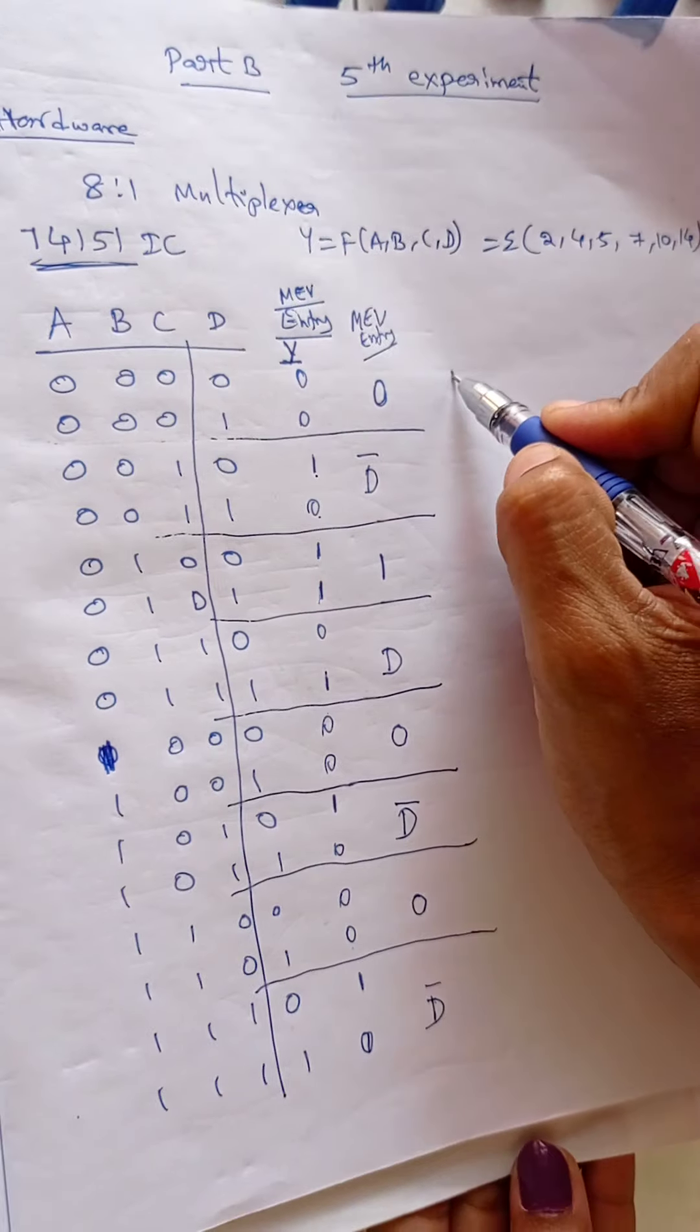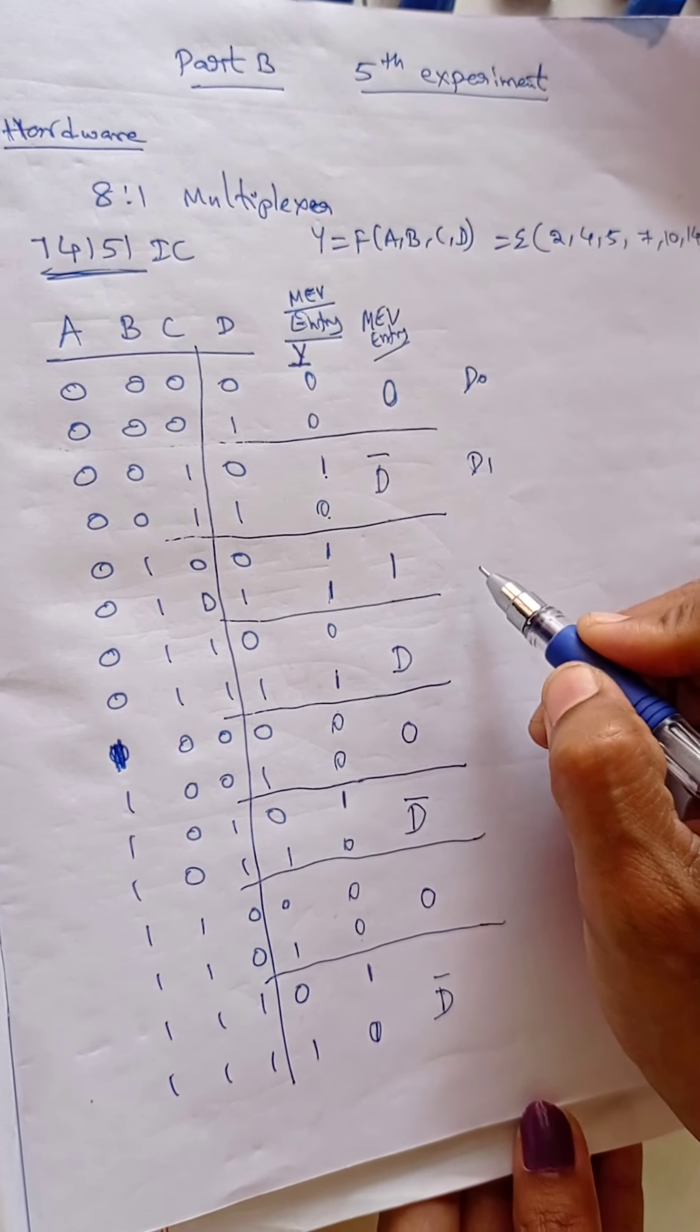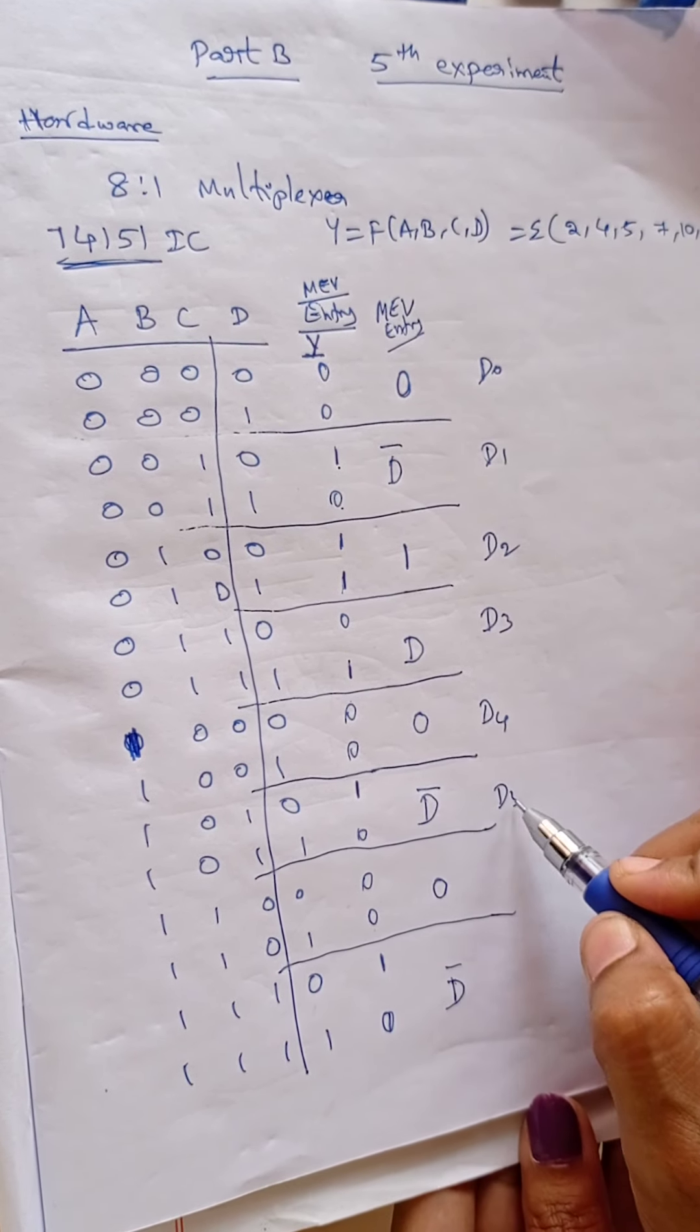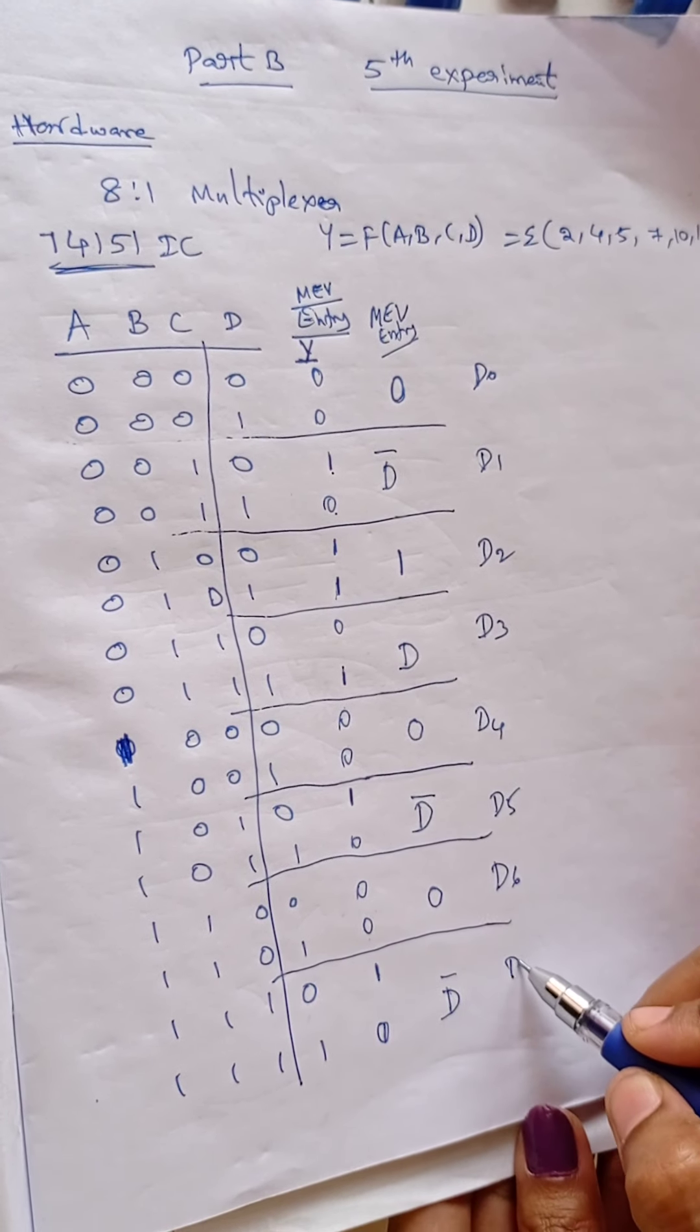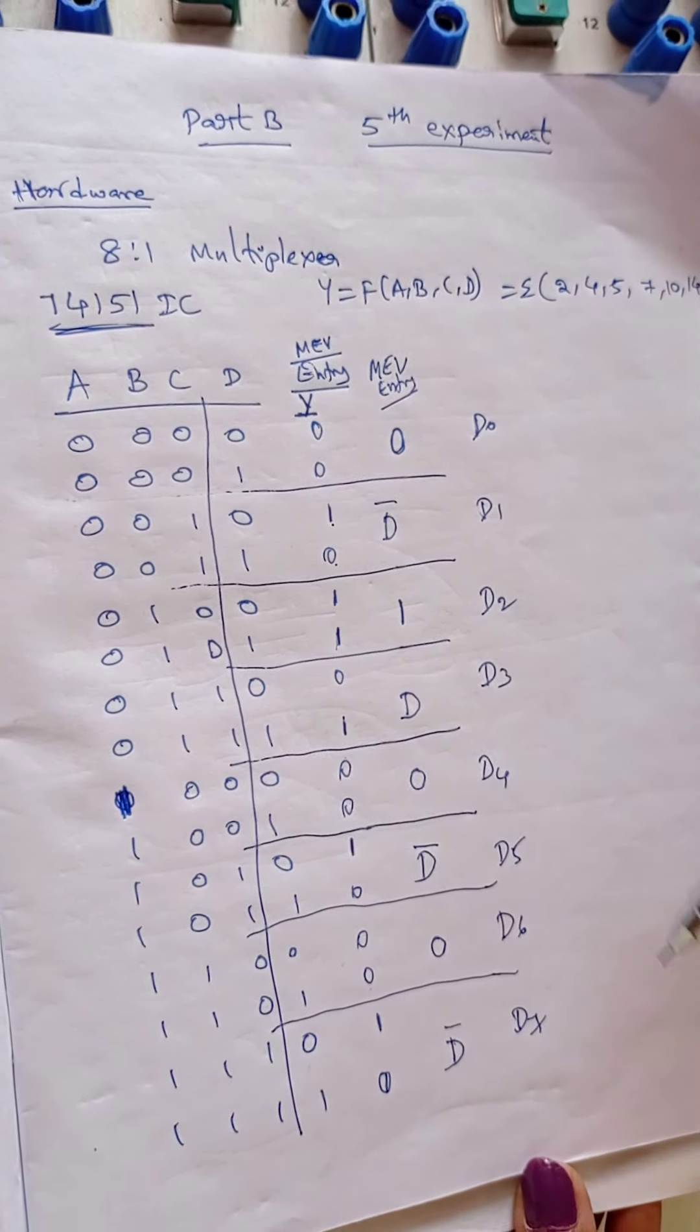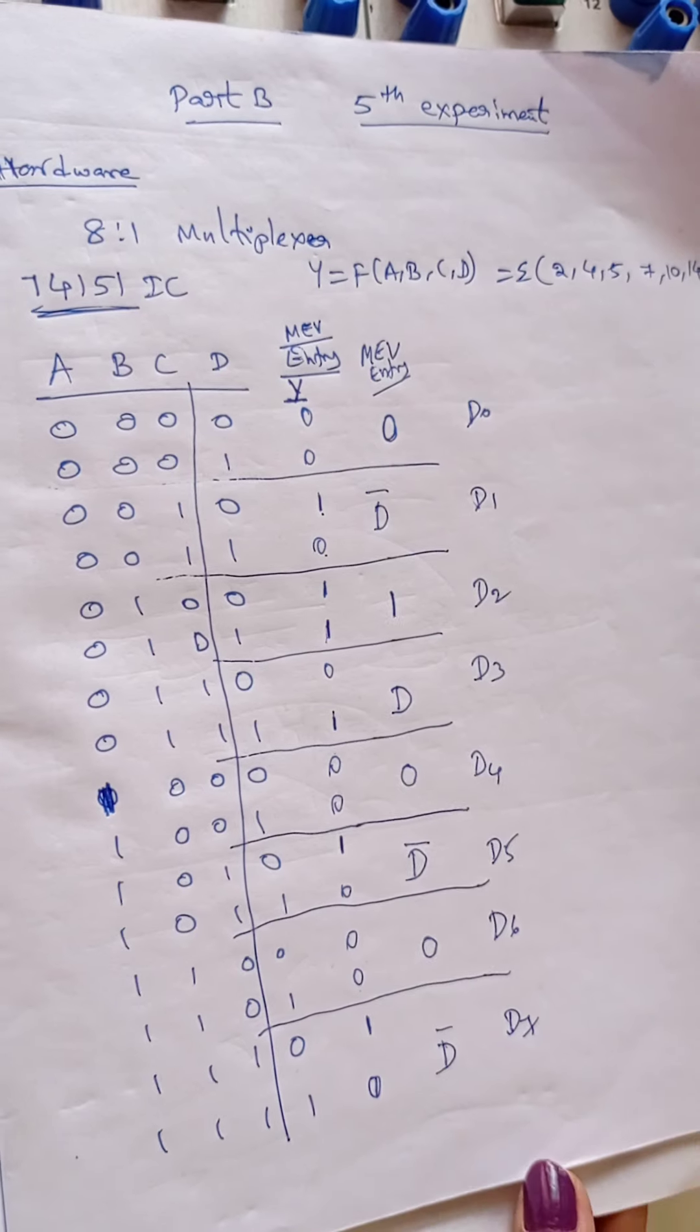So these are all the data lines. D0, D1, D2, D3, D4, D5, D6, D7. This should be given for multiplexer IC data lines input.